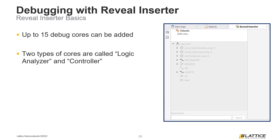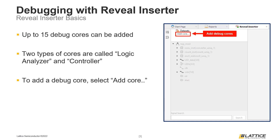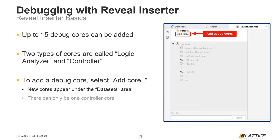To add a debug core, select the Add Core section in Reveal Inserter and from the drop-down that appears, select the type of core you want to add. Once a debug core has been created, it will appear under the Data Set section of the window. One important thing to remember is that there can only be one Controller core per debug configuration. There is no limit to the number of debug cores aside from the overall cap of 15.